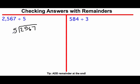So we ask ourselves how many times does 5 go into 25? 5 times. And our steps are divide, multiply, subtract, bring down. So now we multiply 5 times 5 is 25. Subtract. Bring down the next number.